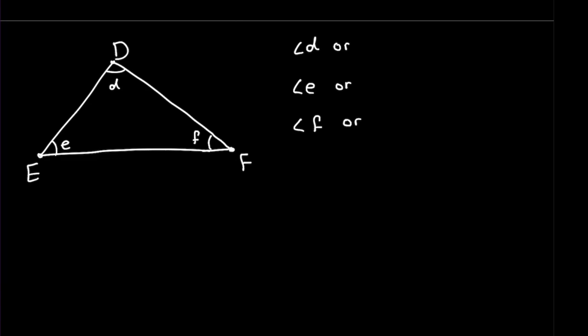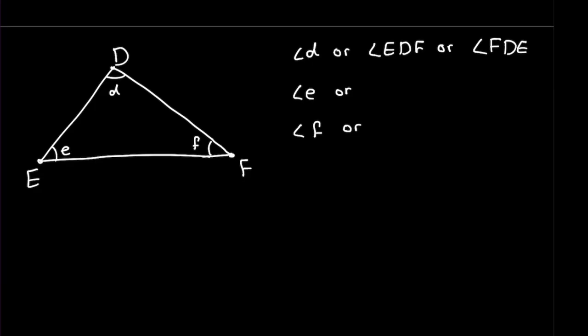Now we're going to say the other names that we can call the angles. So we can say angle D, or also we can say angle EDF, or we can say FDE. What about angle E? The vertex is E, and the other two lines are D and F, so we can call it angle DEF or angle FED. And what about F? We can call it angle DFE or angle EFD.